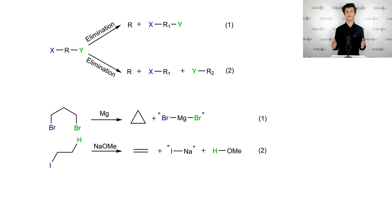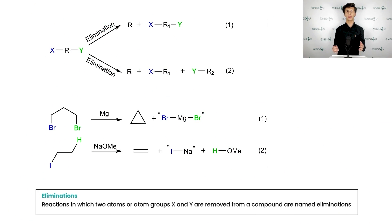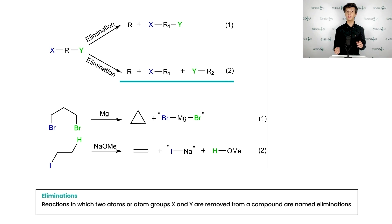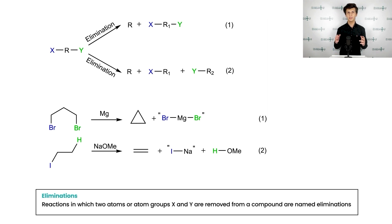Let us begin with the definition of elimination reaction. Reactions in which two atoms or atom groups X and Y are removed from a compound are named eliminations. It is important to note that X and Y can belong to the same molecule or they can be parts of different molecules. On the slide, the first possibility is demonstrated on the top and numbered one, whereas the second general mechanism is depicted below and denoted with number two. You can clearly see how leaving groups are generalized with capital letters X and Y, colored blue and green respectively, and these colorings will be used consistently during the whole lecture.